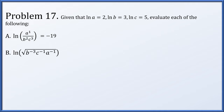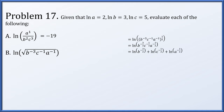Part b: the natural log of the square root of b to the minus 3 times c to the minus 1 times a to the minus 1. Rewriting the radical as an exponent of 1/2, we distribute that 1/2 to each factor inside, giving b to the minus 3/2, c to the minus 1/2, and a to the minus 1/2. The log of a product becomes a sum; powers come out as scalar multiples. Substituting known values gives negative 3/2 times 3 minus 1/2 times 5 minus 1/2 times 2, which equals negative 8.